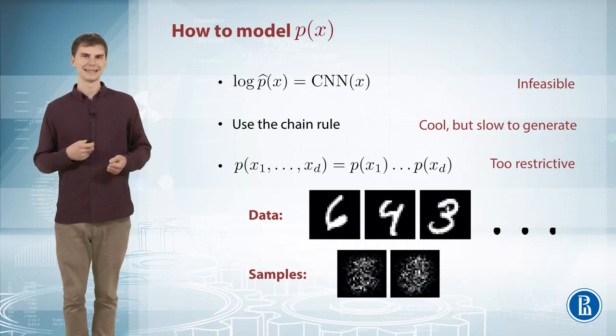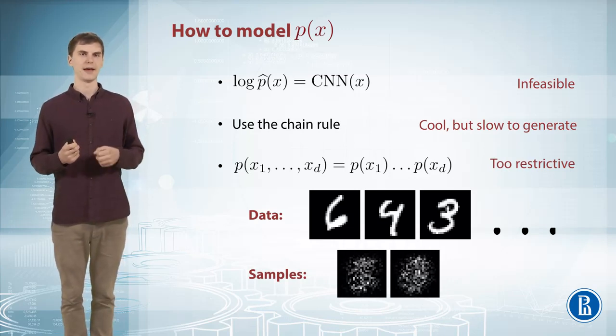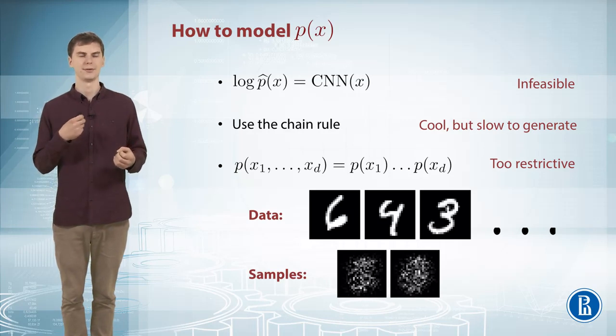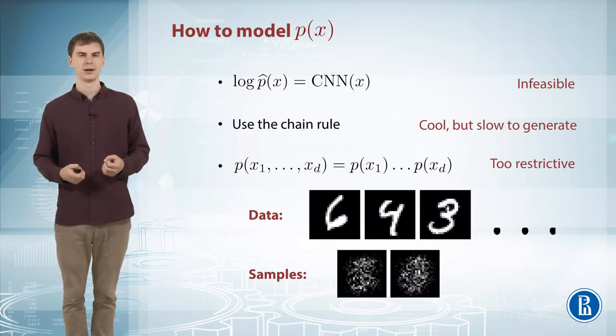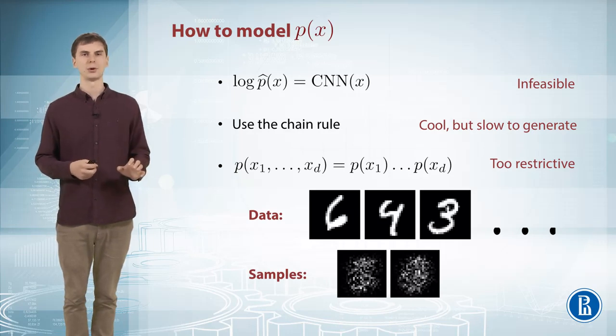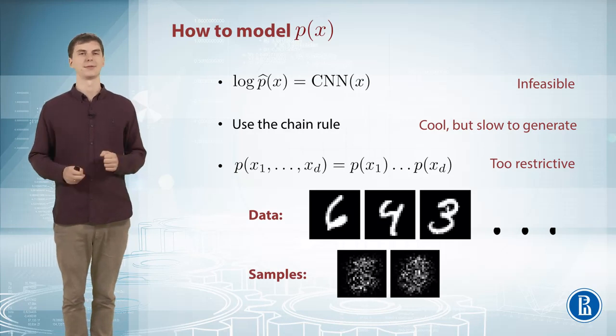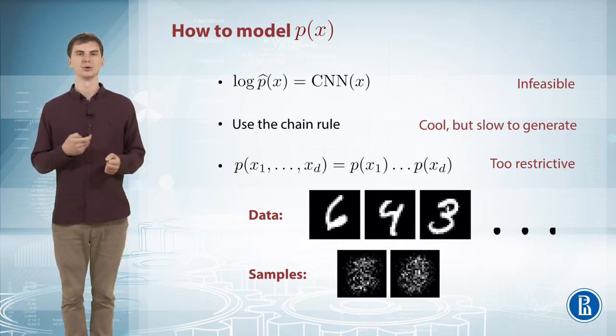That's because the assumption that each pixel is independent of the others really doesn't hold on true data. For example, if you saw one half of the image, you can probably restore the other half quite accurately, which means they're not independent. So this assumption is too restrictive.